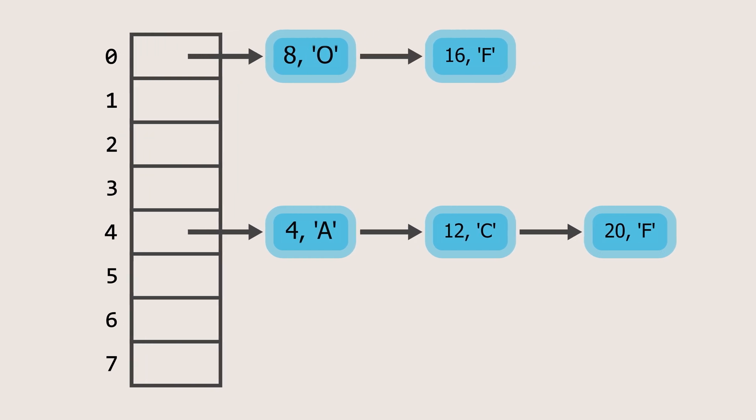Now, deleting an element works in a similar fashion. Let's delete the element with the key 12. First, the index is calculated by passing the key through the hash function. Then, the key is searched within the linked list at that index. Once the element is found, it is deleted, and the next pointer of the previous node is updated to point to the next node, effectively removing the element from the linked list.